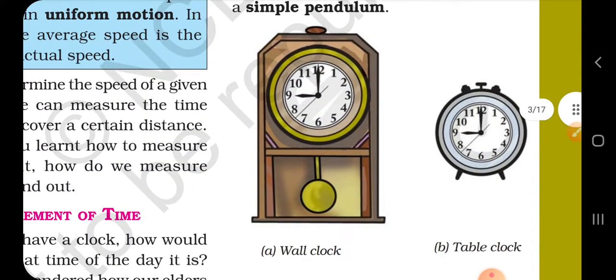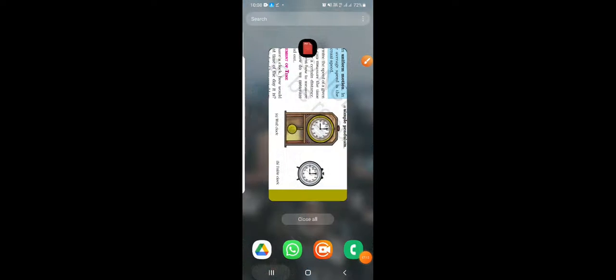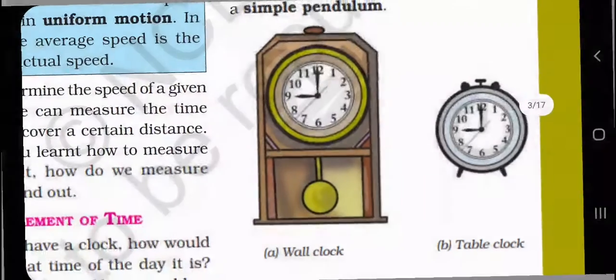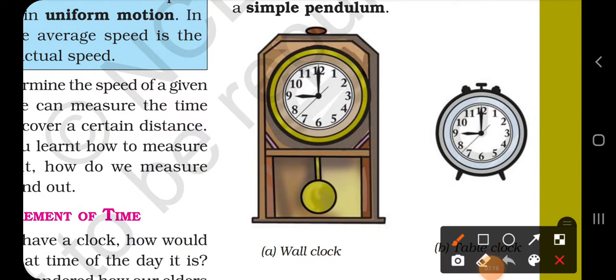Later they invented the simple pendulum. What happens in a simple pendulum? This moves from here to there, from here to there, in one second. This is a simple pendulum.